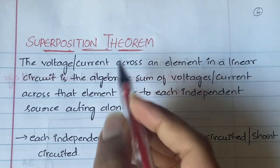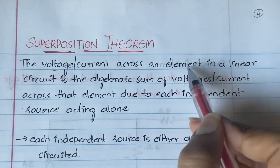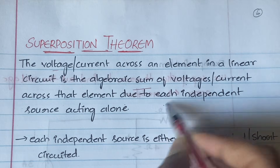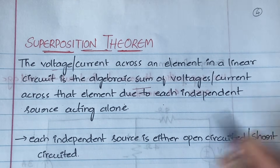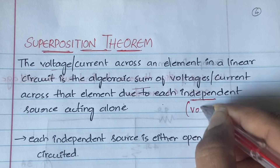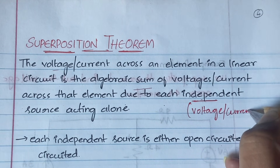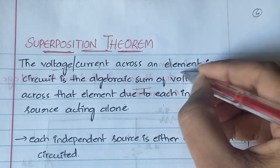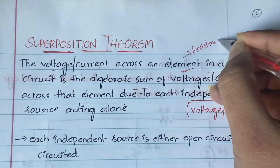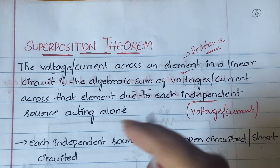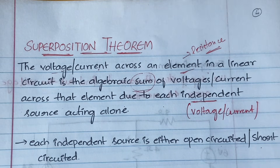According to the superposition theorem, the voltage or the current across an element in a linear circuit is the algebraic sum of voltages or currents across that element due to each independent source acting alone. Each independent source is either open circuited or short circuited. The independent source could be a voltage source or a current source.